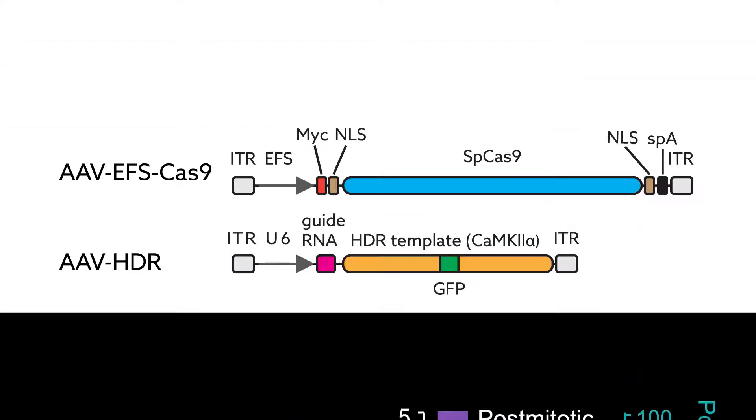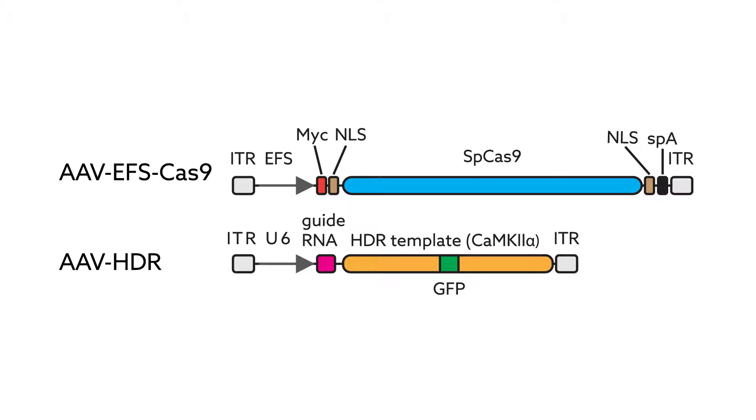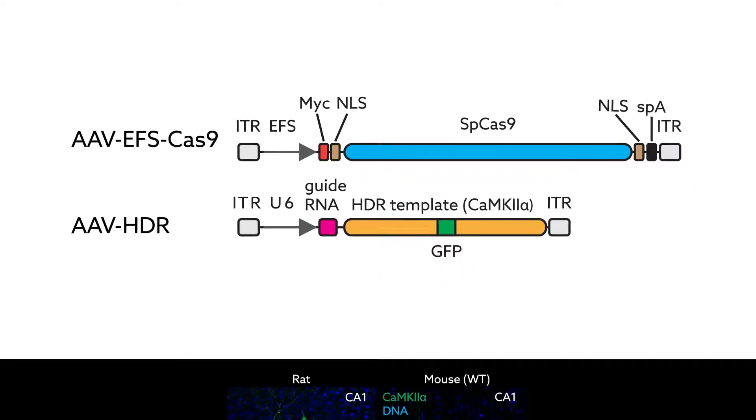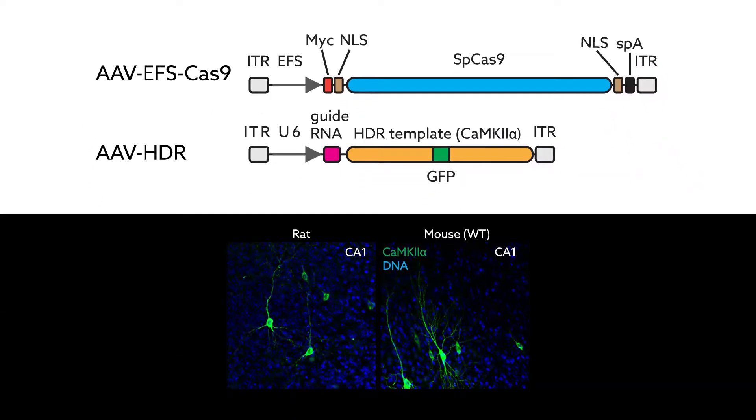The group then created a dual-viral system, so they could use the technology in many animals that have not been engineered to express Cas9. This worked in both rat and mouse brain slices.